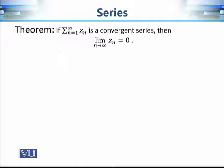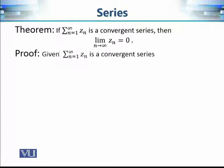Now let's see how to prove this criterion. We are given that the series is convergent, and we want to show that the limit as n approaches infinity of zₙ equals 0.